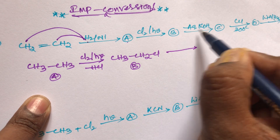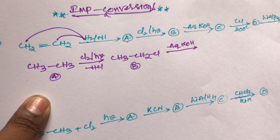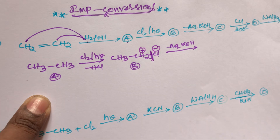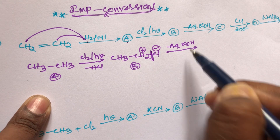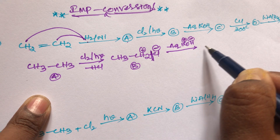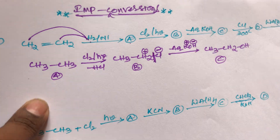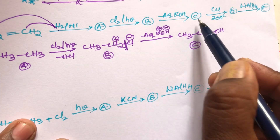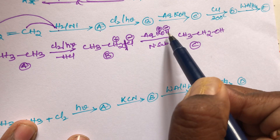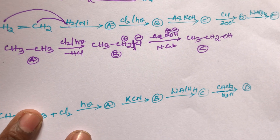When compound B reacts with aqueous KOH — aqueous, not alcoholic — the reaction is a nucleophilic substitution. The C–Cl bond breaks heterolytically: carbon gets a positive charge and Cl⁻ acts as the nucleophile leaving group. In aqueous KOH, OH⁻ replaces Cl⁻. We get CH₃CH₂OH as compound C. This is a nucleophilic substitution reaction because Cl⁻ (the nucleophile) is replaced by OH⁻ (another nucleophile).